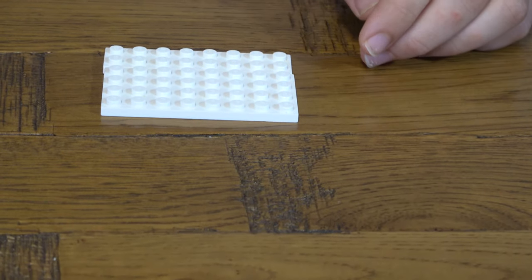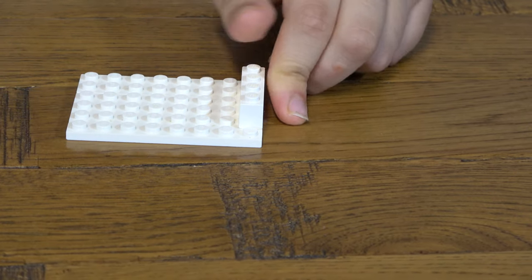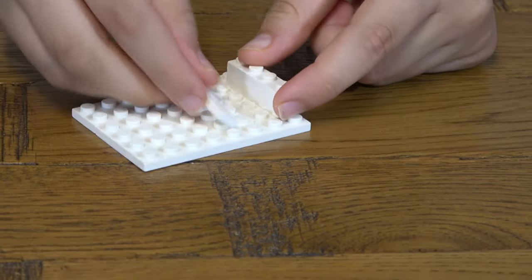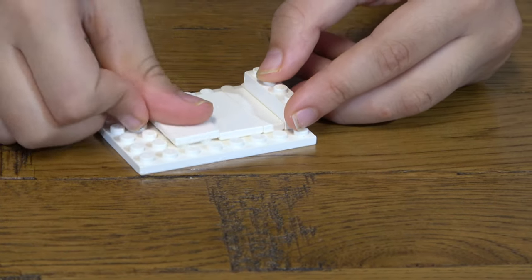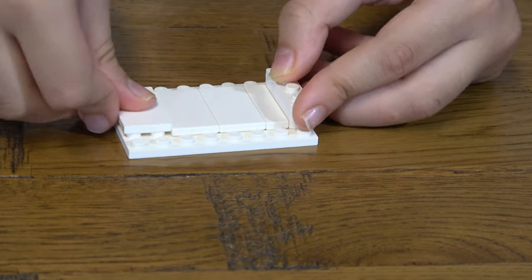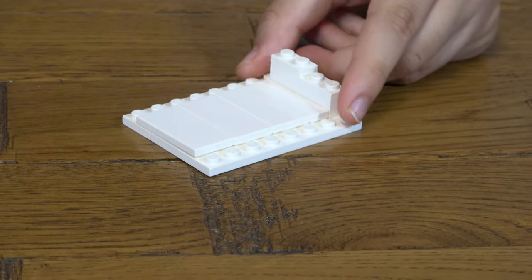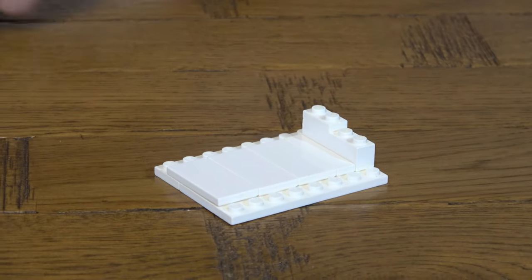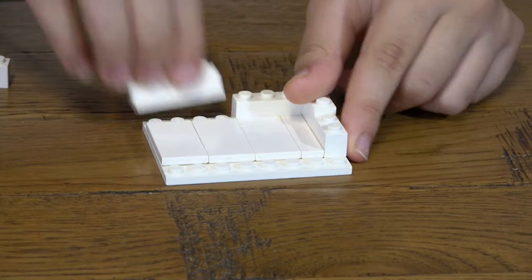This like this, like so. We place this here. Place one of these here, then three of these like so. Then we get one of these, place it there. And then we place this here.